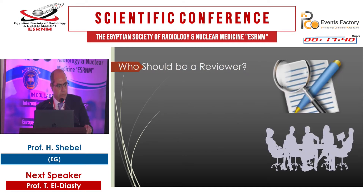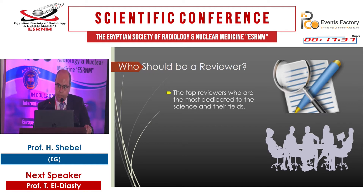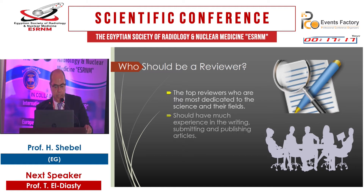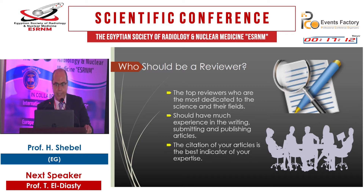Who should be a reviewer? Usually reviewers are experts in their fields and this expertise should be validated and proved. The best proof is through their scientific contribution — through editing articles, submitting articles, presenting new concepts and new ideas. One of the best indicators of expertise is their citation count in the field, and how their articles have helped other authors and other scientific papers.